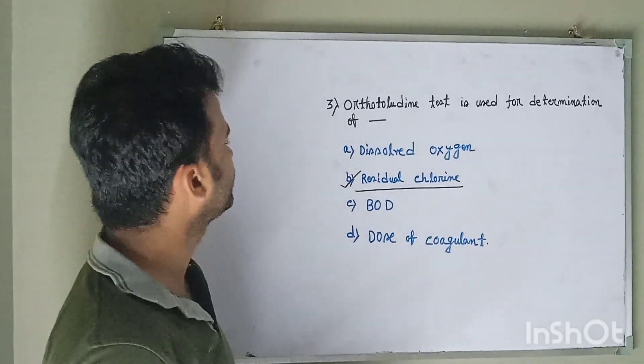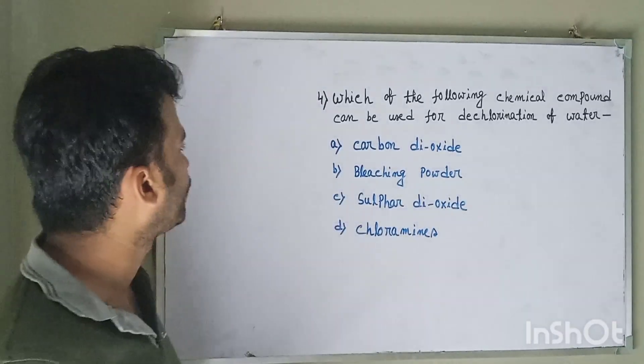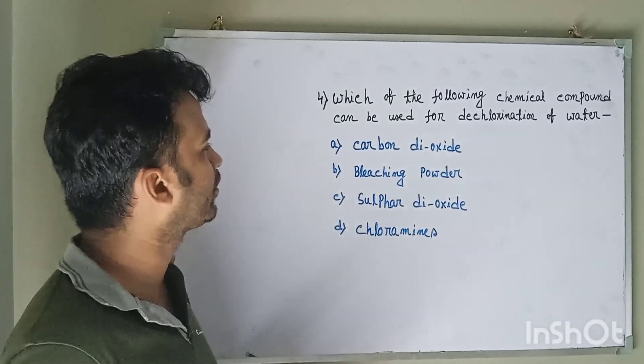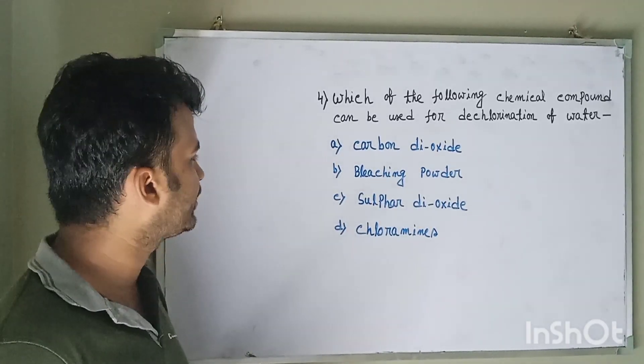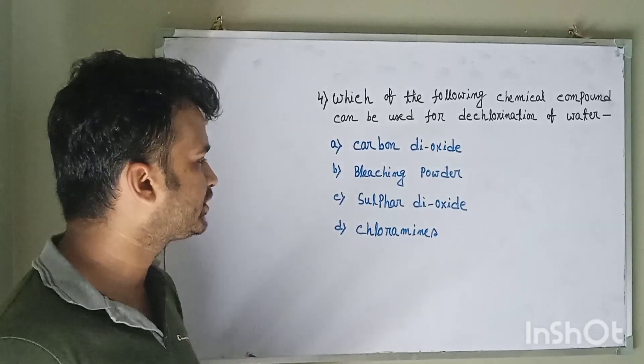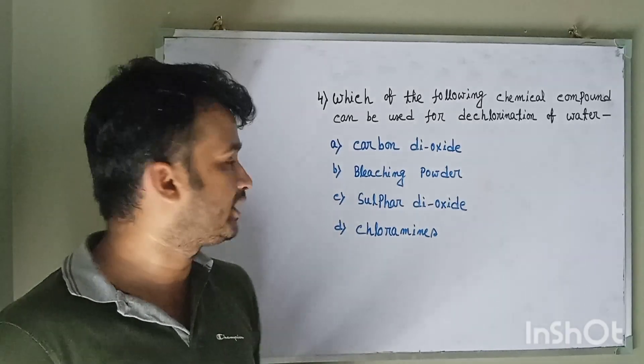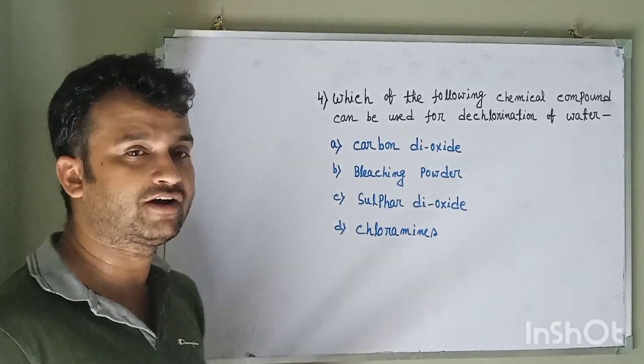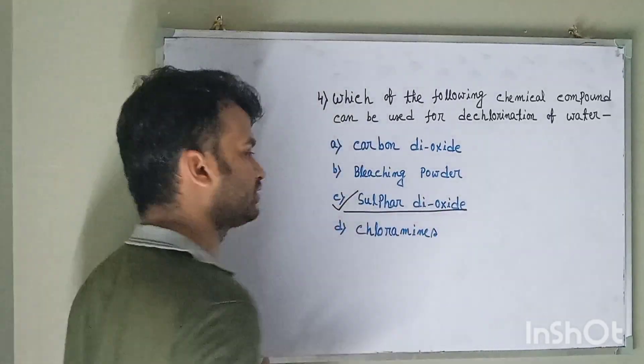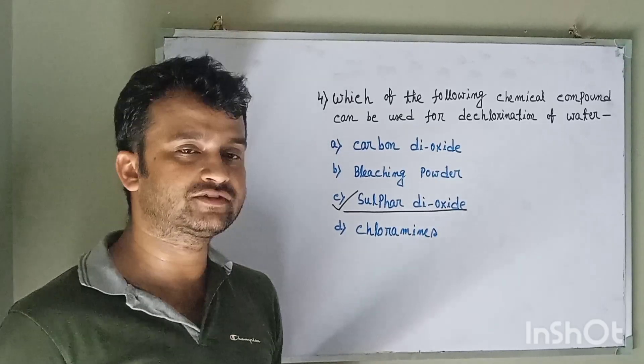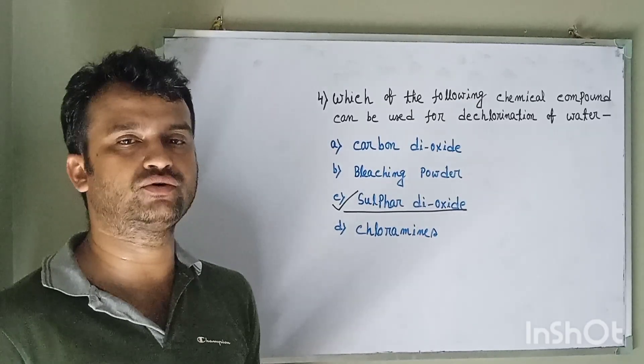Question number four: Which of the following chemical compound can be used for dechlorination of water? Option A carbon dioxide, option B bridging powder, option C sulfur dioxide, and option D chloramine. The correct answer is sulfur dioxide, option C. Remember, apart from sulfur dioxide, activated carbon and sodium thiosulphate is also used for dechlorination of water.